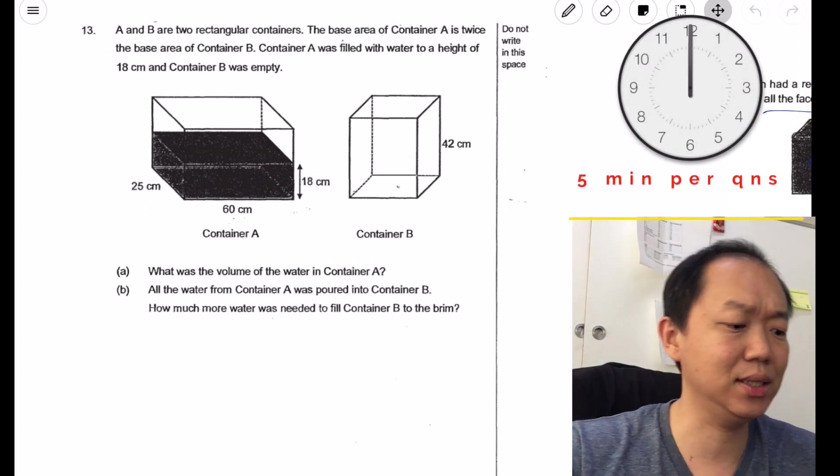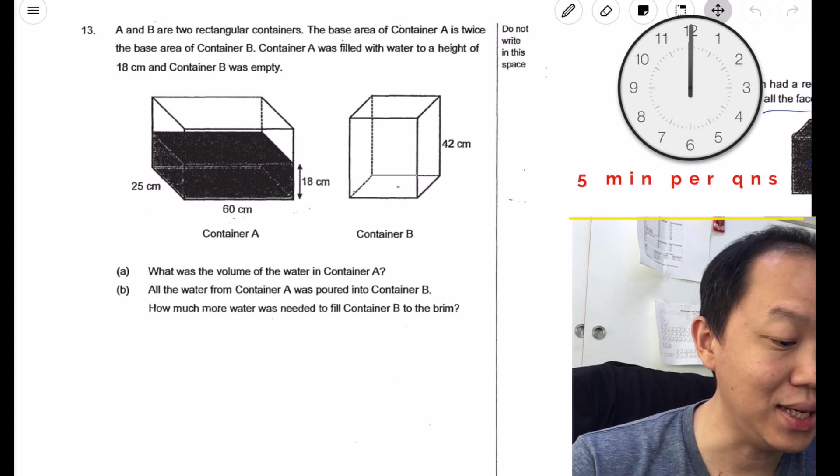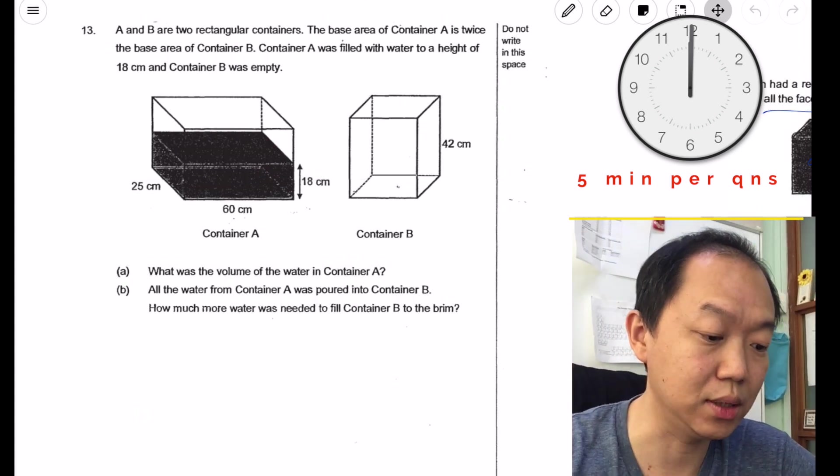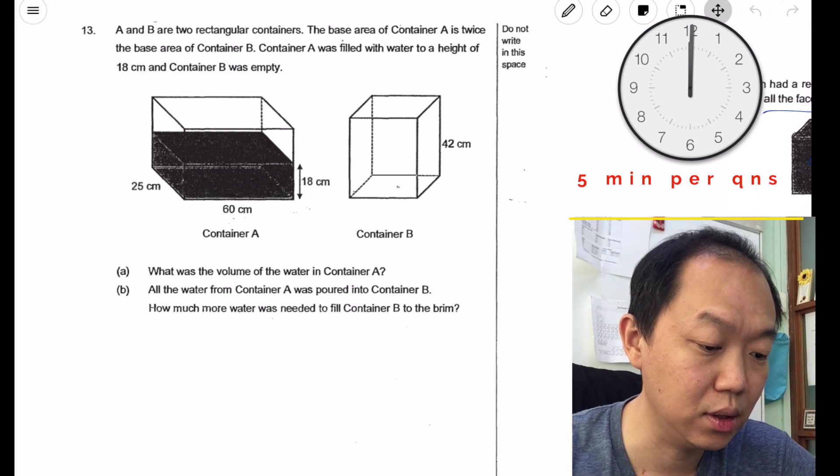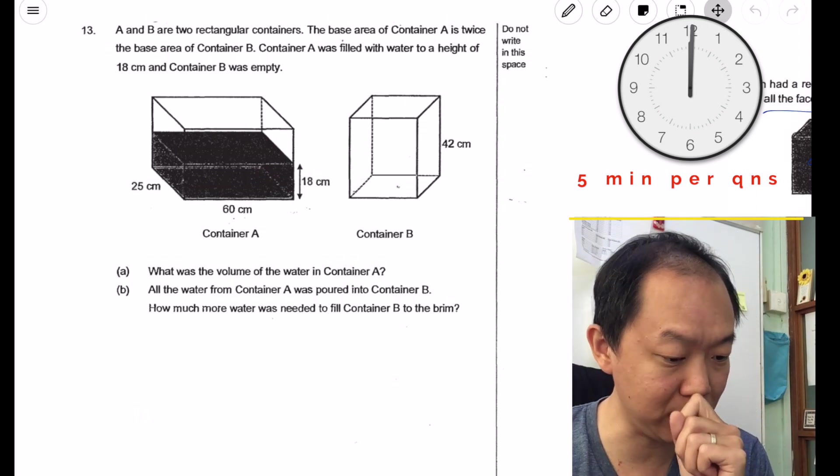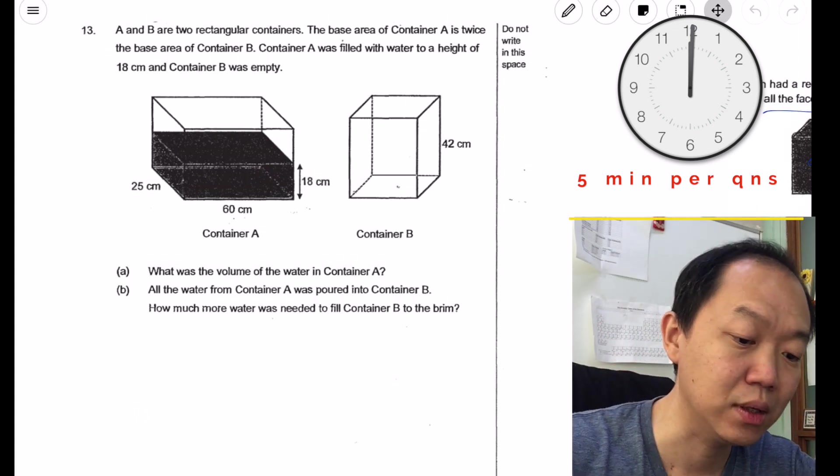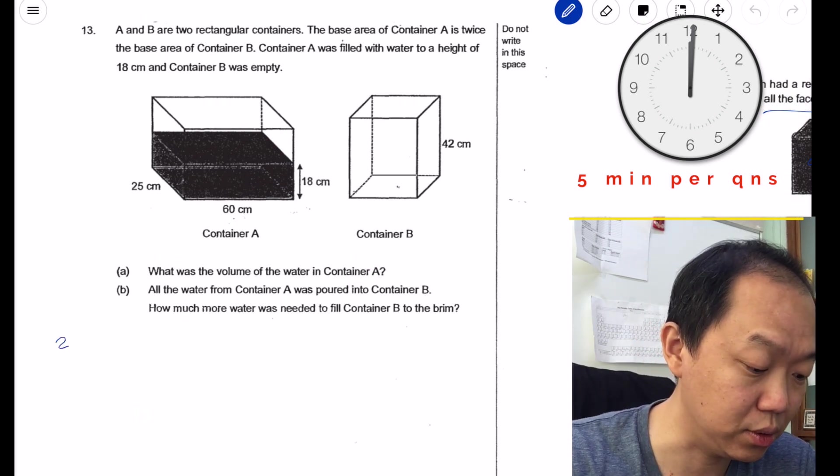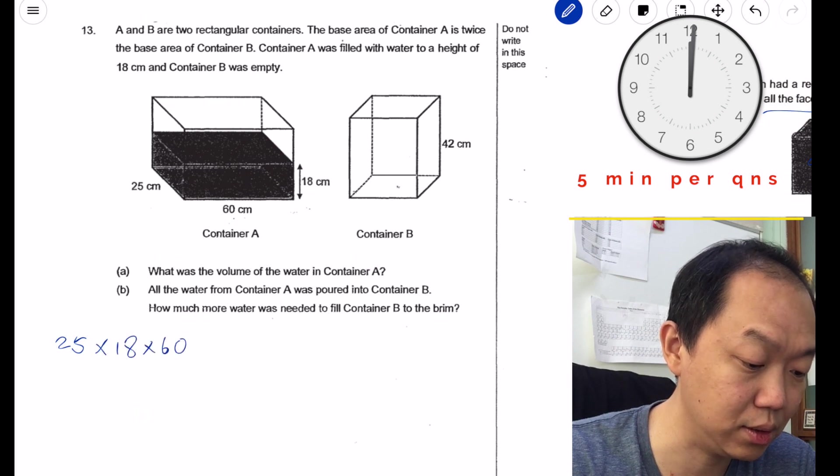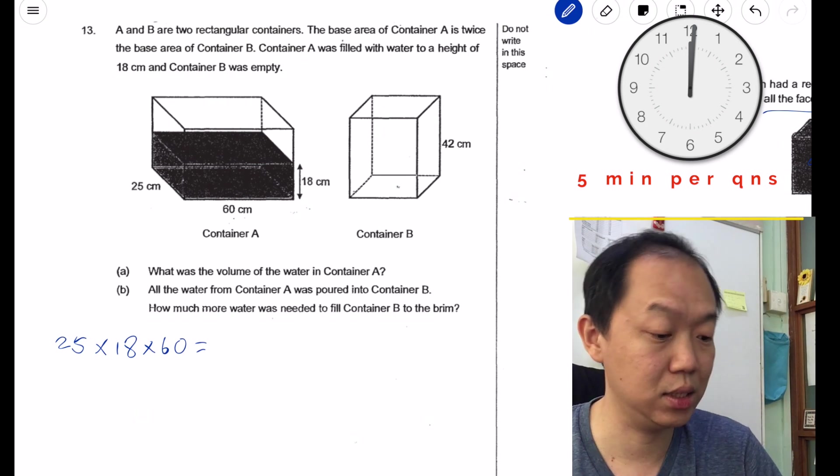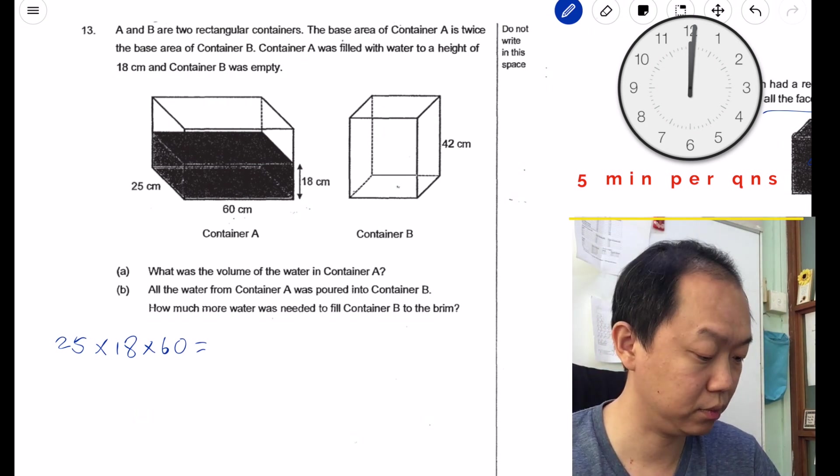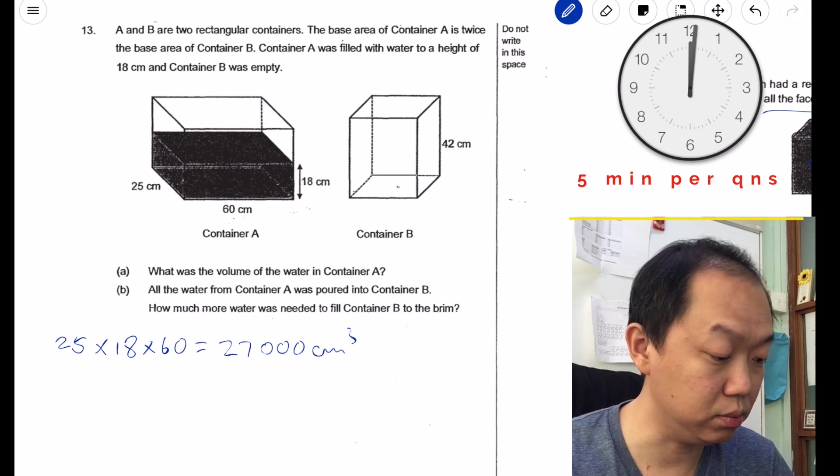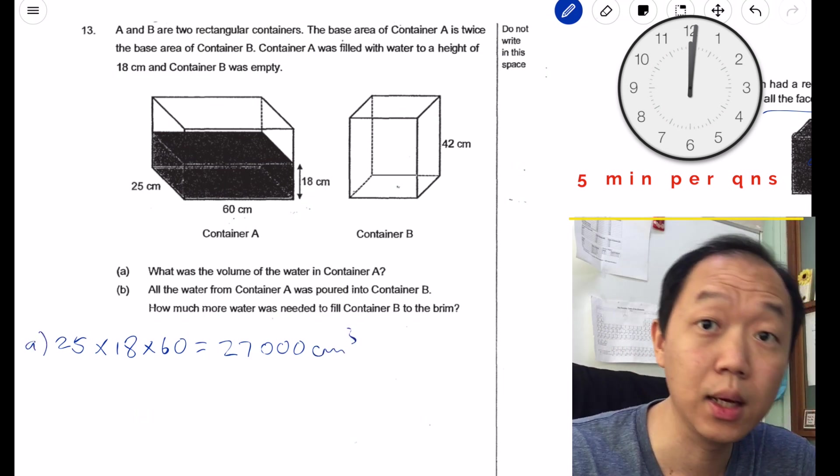First, A and B are two rectangular containers. The base area of container A is twice the base area of container B. Container A was filled with water to a height of 18 cm and B was empty. What was the volume? The first question is pretty easy, all we have to do is multiply length and breadth times height. So 25 times 18 times 60, that would be the volume. 27,000 cm cubed.